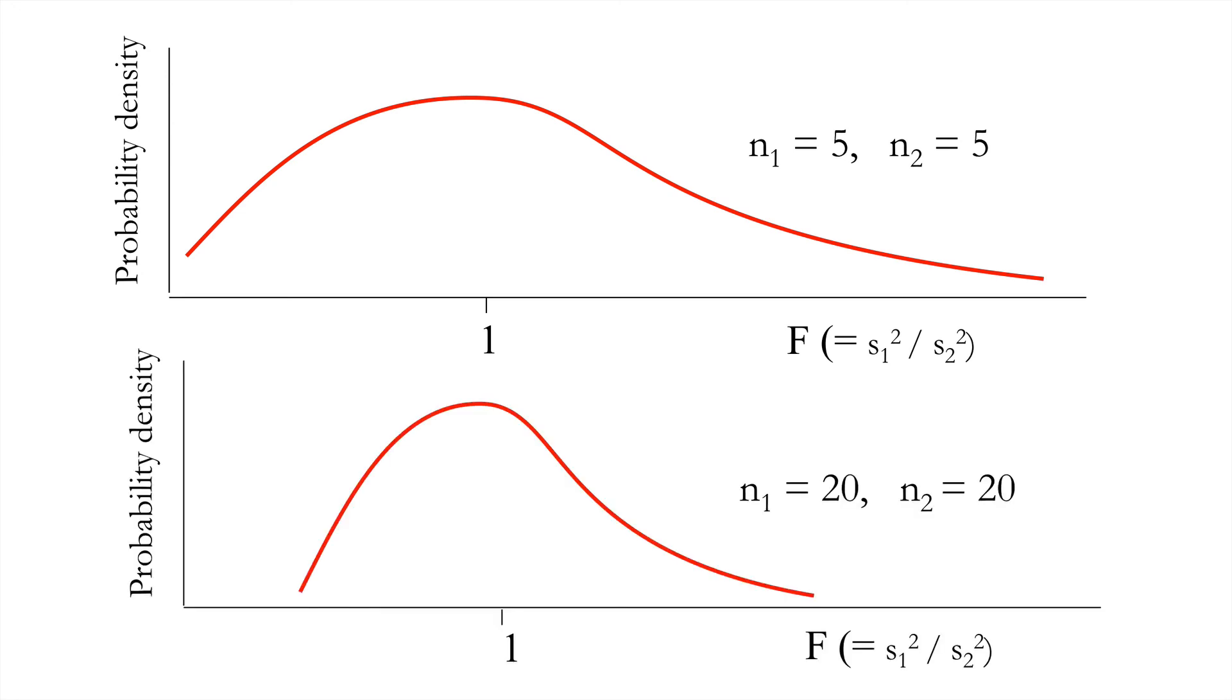But of course, as we get higher and higher sample sizes, for example, N1 as 20 and N2 as 20, then the expected ratio is likely to be much closer to one than if we had a smaller sample size. So the variability in that overall F distribution is supposed to be less.